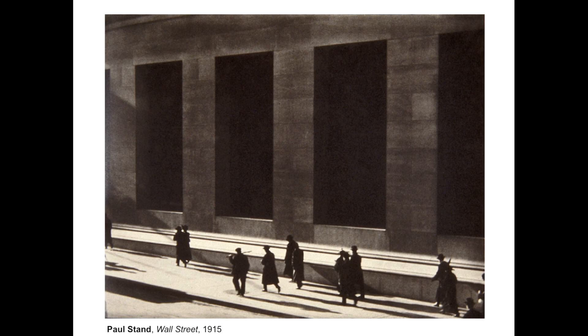Shape is created by enclosing a line, or by a color and value. It has defined edges, and it can be organic or geometric. Look at the looming trapezoidal shapes in the top half of this picture that give weight to the image. They give a seriousness to this photograph.